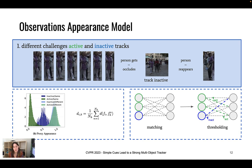Therefore we propose to use different matching thresholds in our bipartite matching. We first associate all detections to all tracks — both active and inactive — and then threshold the matchings afterwards using separate active and inactive thresholds tau.